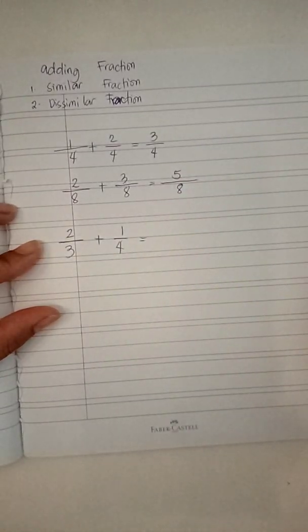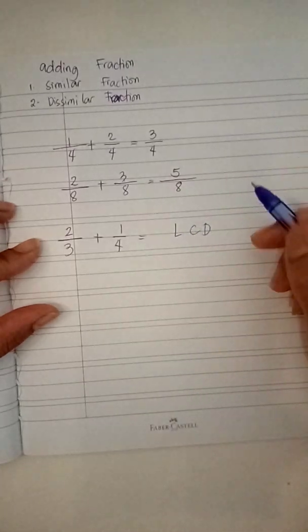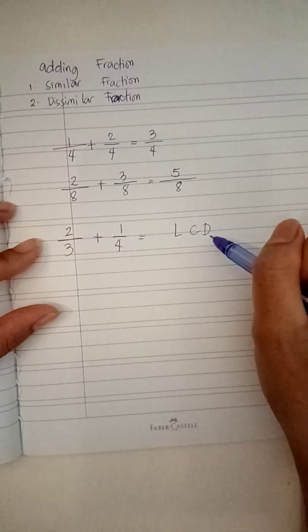If it is dissimilar fraction, you need to find the LCD, the least common denominator.